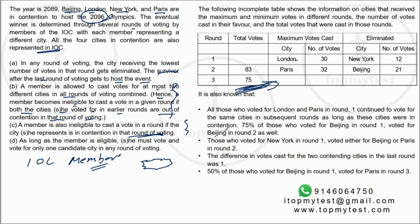So in round one, all four city delegates — London, New York, Paris, and Beijing — cannot vote. In round two, New York is eliminated so the New York delegate can now vote, but London, Paris, and Beijing delegates still cannot. The fourth rule states that as long as a member is eligible, he or she must vote for exactly one candidate per round — no abstaining, no multiple votes.